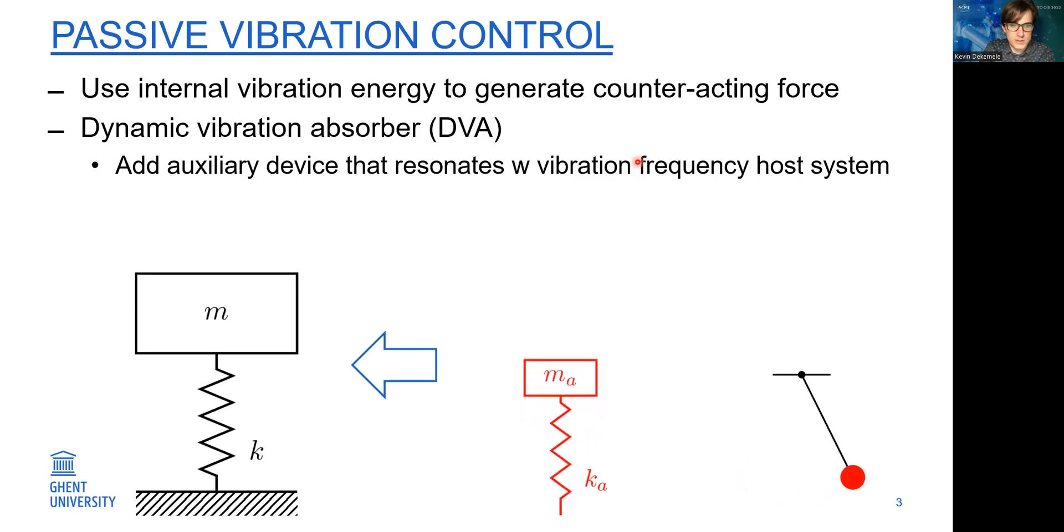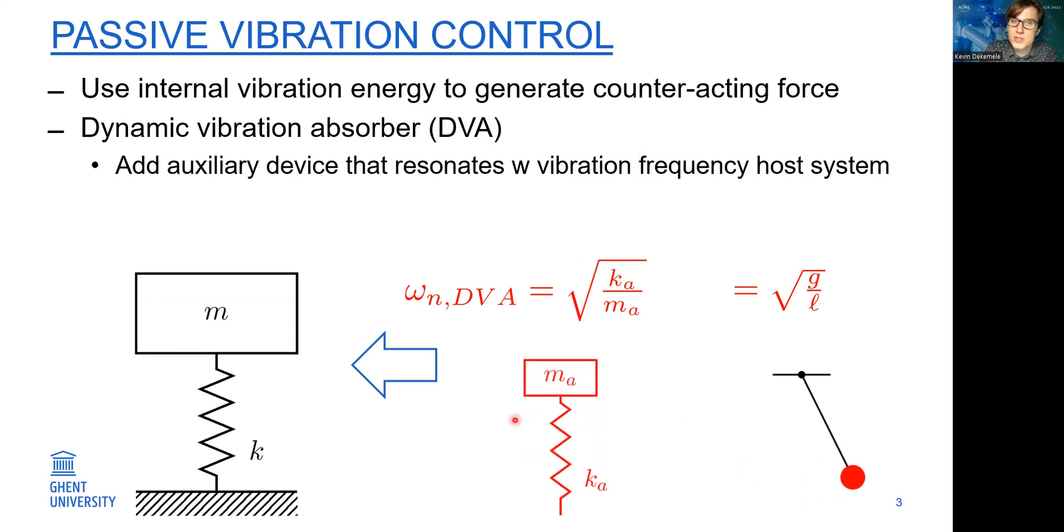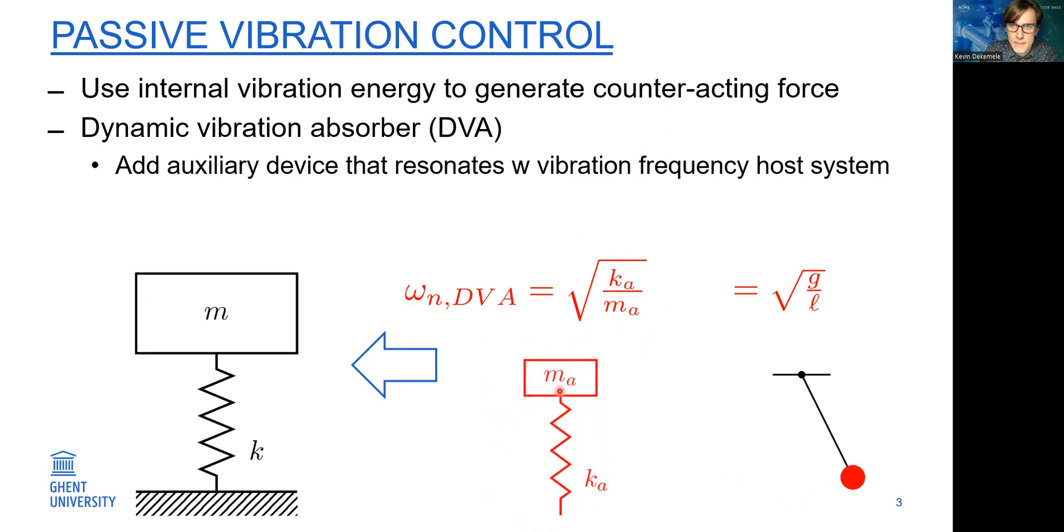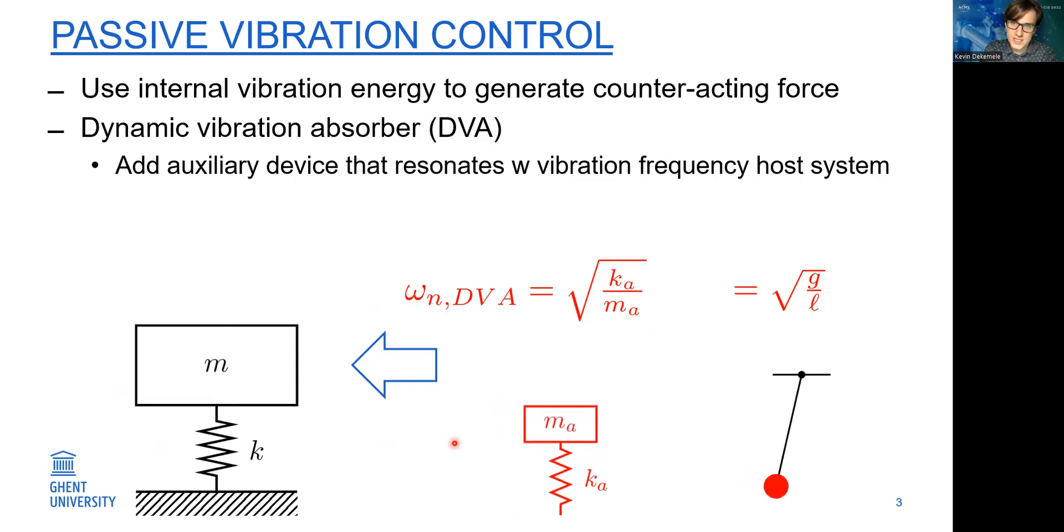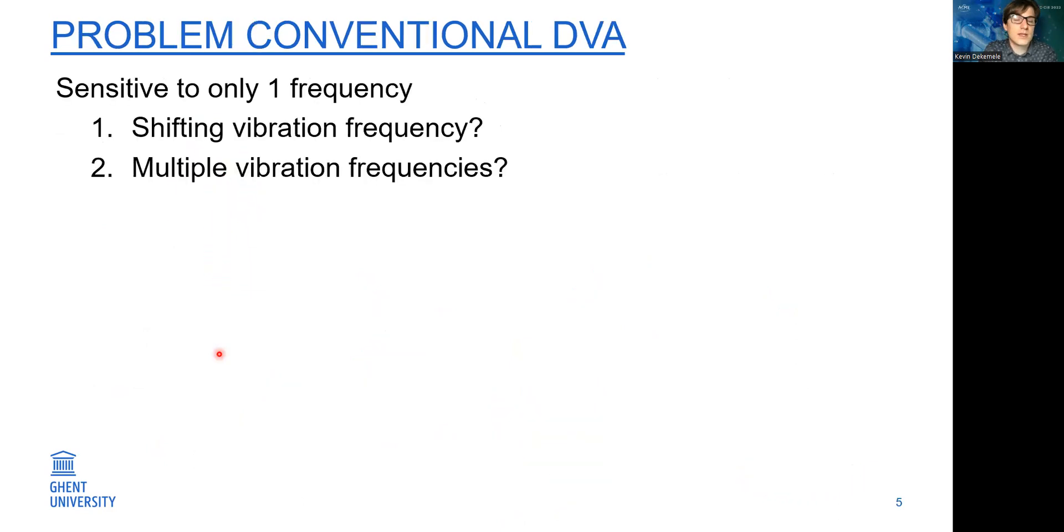What we have here is the conventional DVA, which is a linear spring and linear mass. If the resonant natural frequency of this device matches the vibration frequency of the host system, it will successfully damp the vibrations. For example, this animation shows all the vibration energy is now in the absorber and not anymore in the host system.